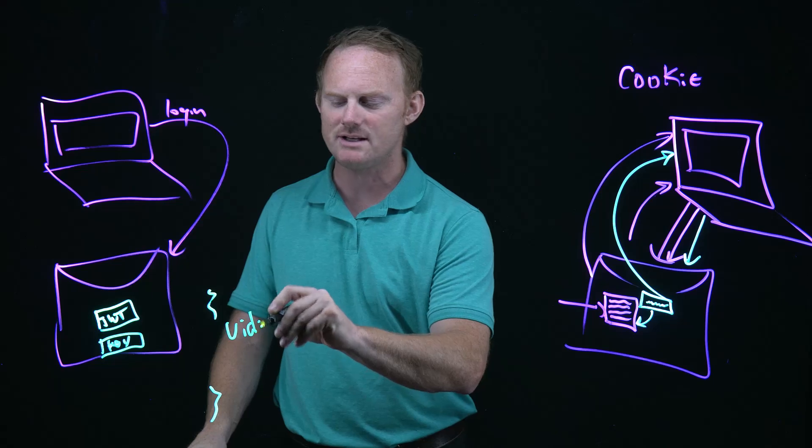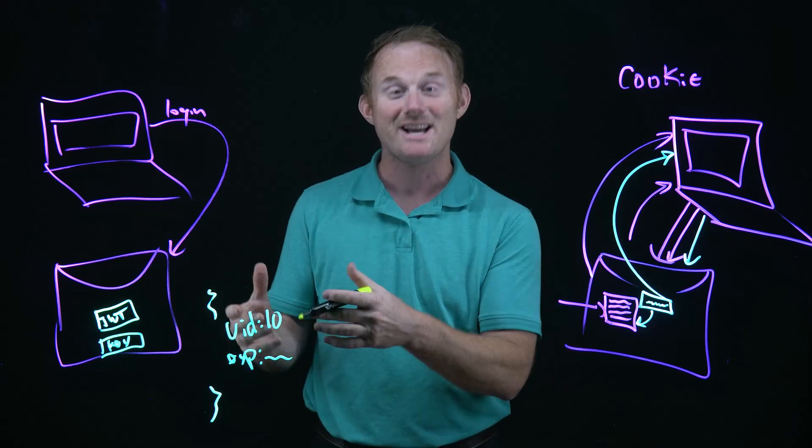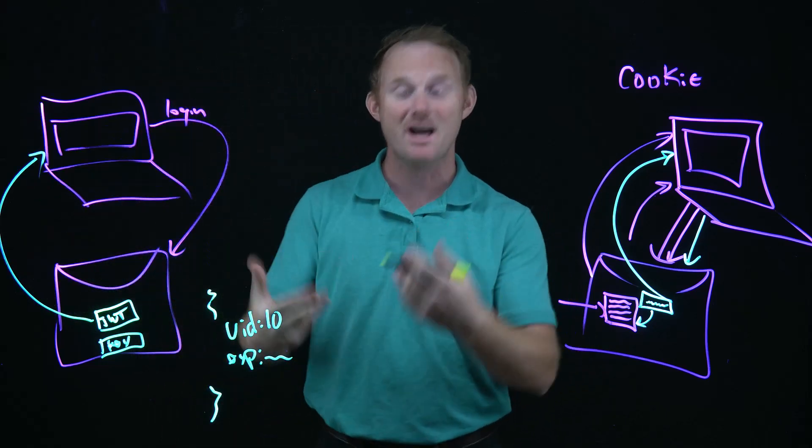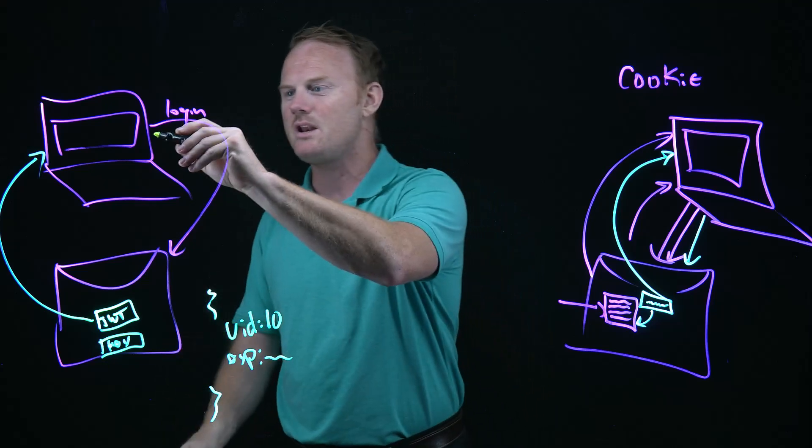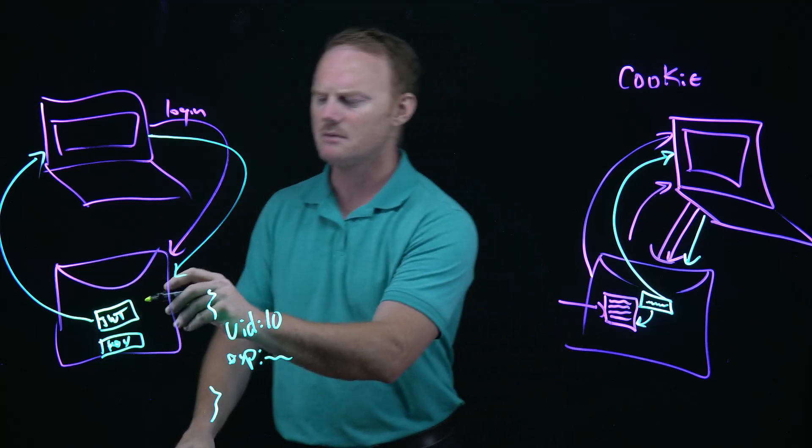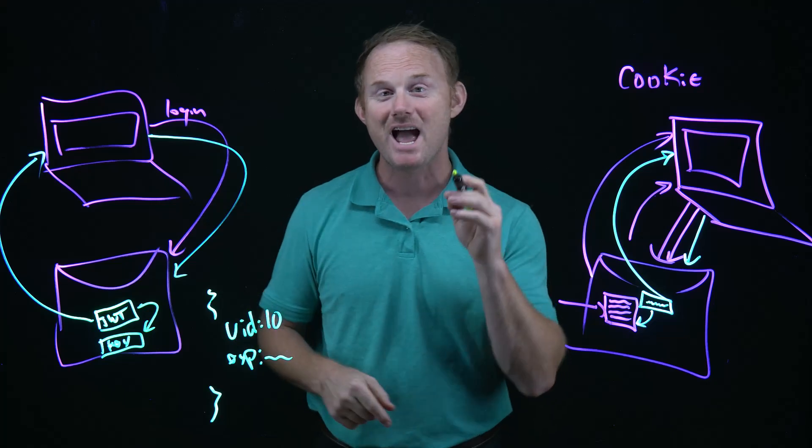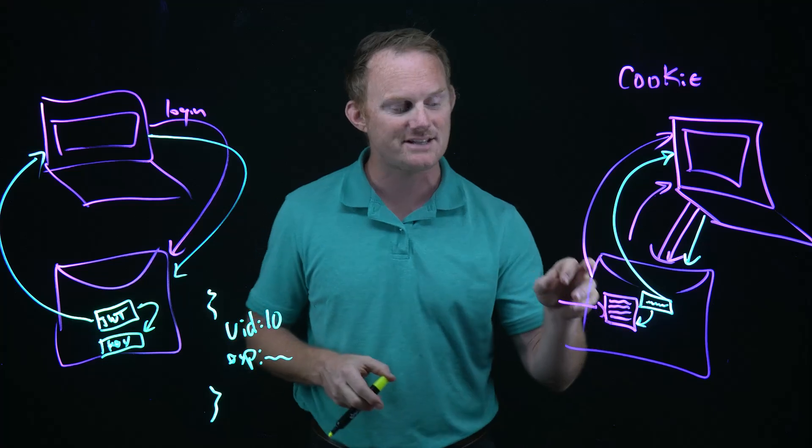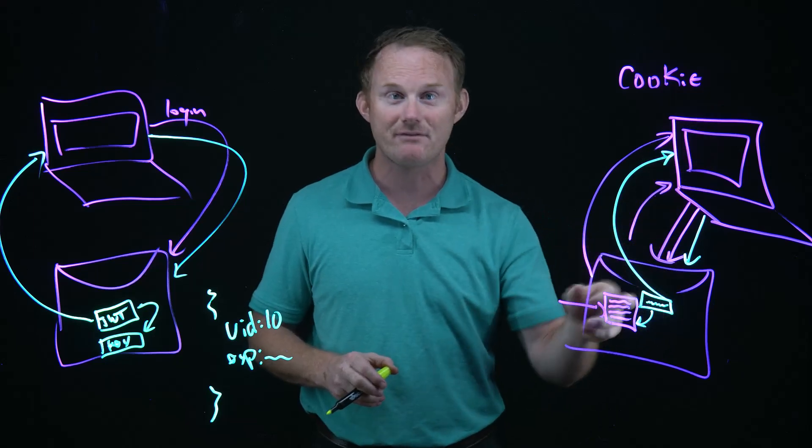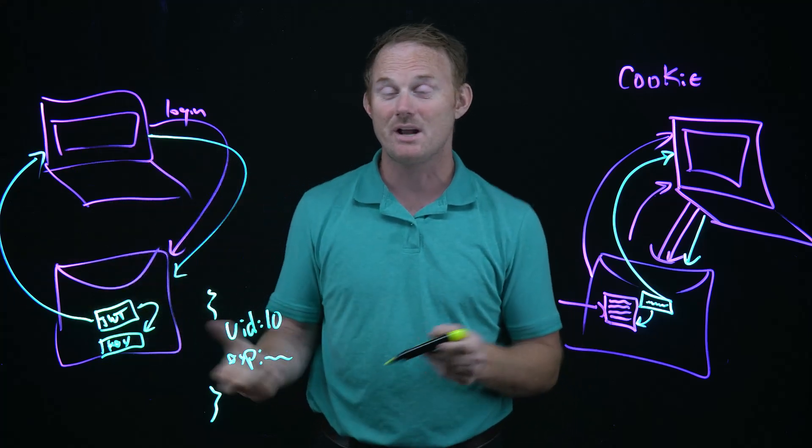Maybe you put in there UID of 10 and an expiration date, whatever. This data is carried around inside the token, which gets sent back to the user. The user does stuff, makes another HTTP request, and sends that web token back up. The server checks: 'Is this one that I made?' It looks at the key. 'Oh yes, this is one I made. What's in here? There's a UID of 10. I know who this person is.' In contrast, with cookies, the data is stored on the server. When the cookie comes in, it checks the cookie and finds the data. In this case, the data follows the token around.